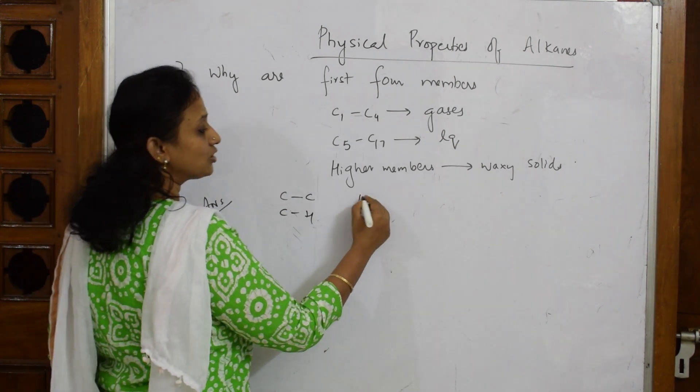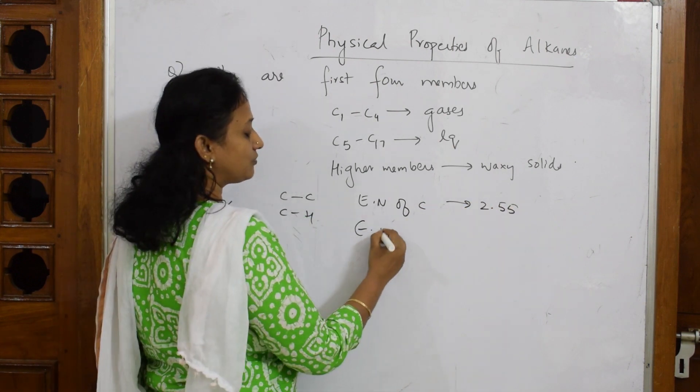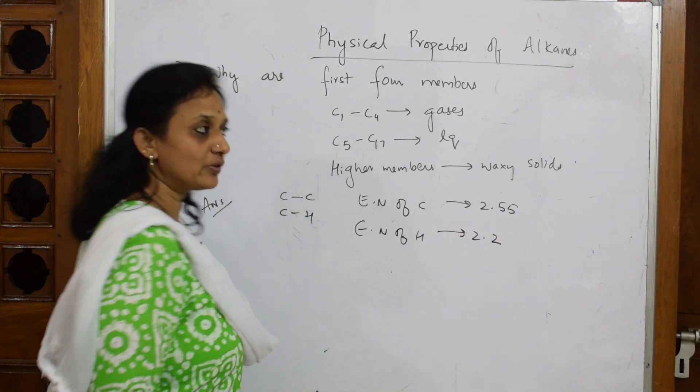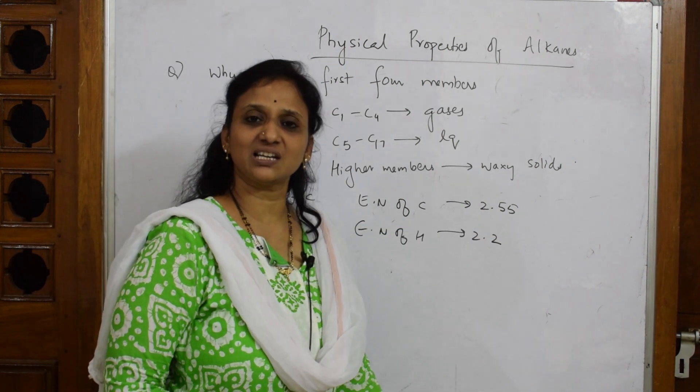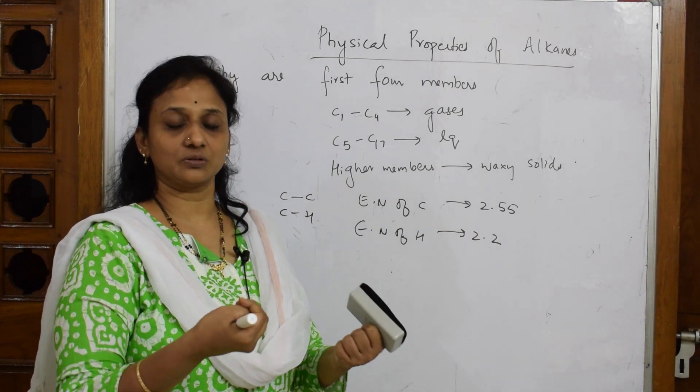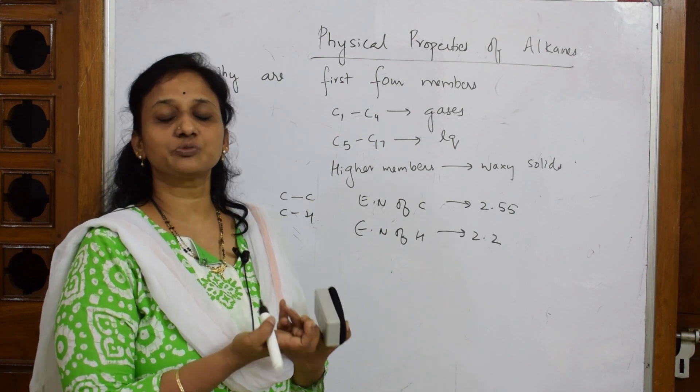The electronegativity of carbon is 2.55, the electronegativity of hydrogen is 2.2 only. Now when the difference of both is very very less, isn't it? When you see there is a lot of difference, they start dragging the electron, they try to pull the shared pair of electrons. When they try to pull the shared pair of electrons, ions are created, polarity is created.